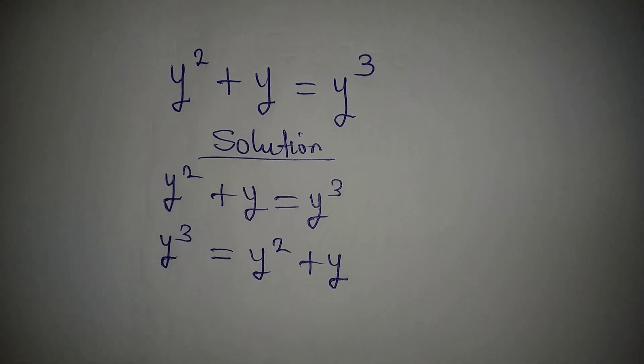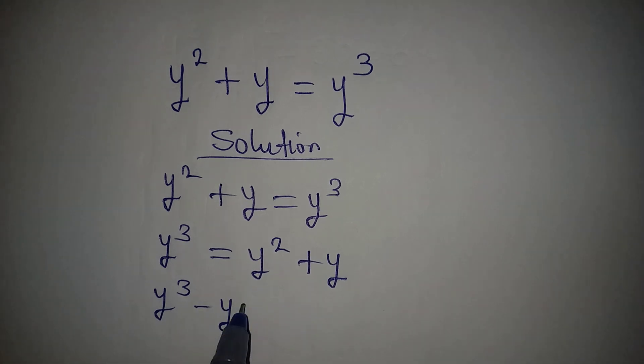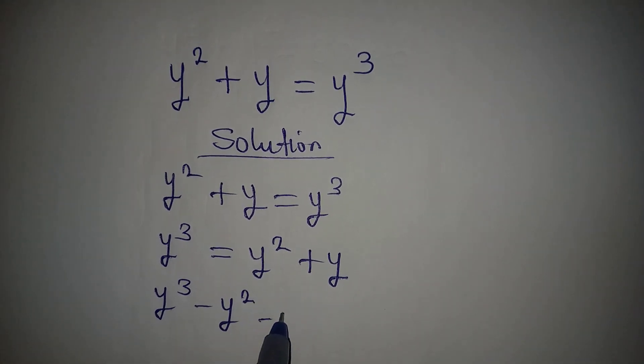Now the next thing I will do is bring everything to one side. y to the power of 3 minus y squared minus y is equal to 0.